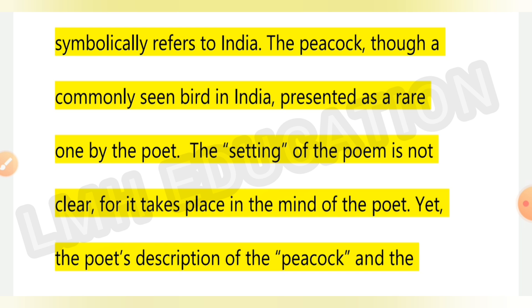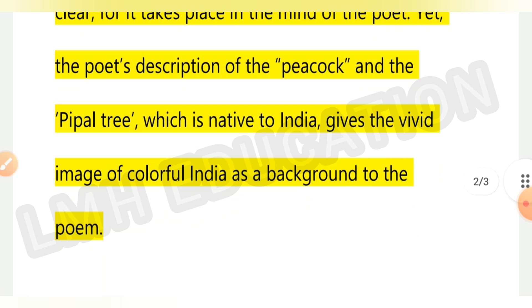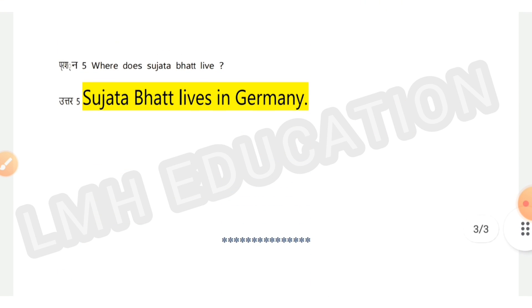The setting of the poem is not clear, for it takes place in the mind of the poet. Yet the poet's description of the peacock and the peepal tree, which is native to India, gives a vivid image of colorful India as a background to the poem. Next, question number five: where does Sujata Bhat live?